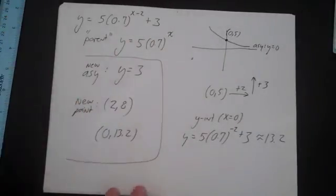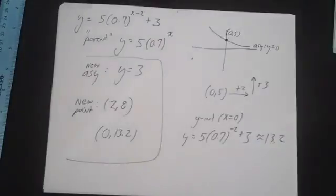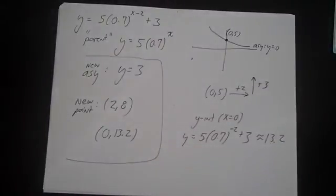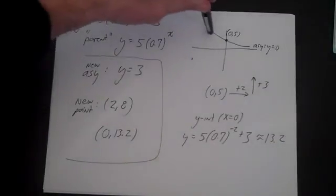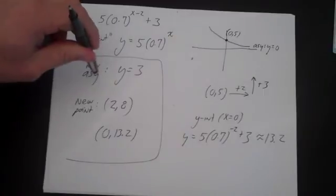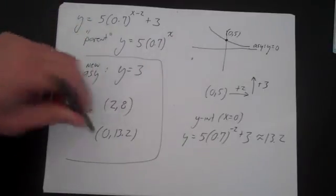Now you simply use these 3 to graph it. So what do we do? Our steps were first we identify the parent function and the general shape. Then we identify the new asymptote and 2 new points.